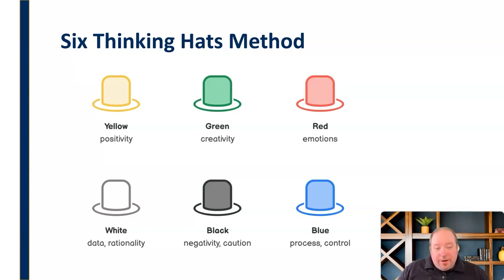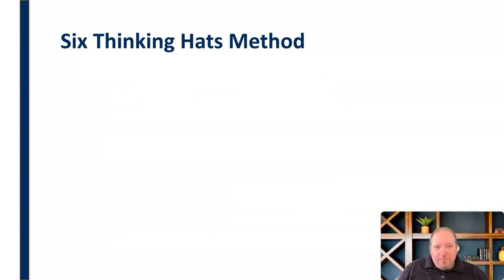Blue has to do with the process of how we implement things and what it would look like to go through this. Black is where we try and poke holes in things. It's the negativity. We bring up the devil's advocate stuff and poke holes and try and talk about what could go wrong here, what are the potential consequences. And then white has to do with data and rationality.